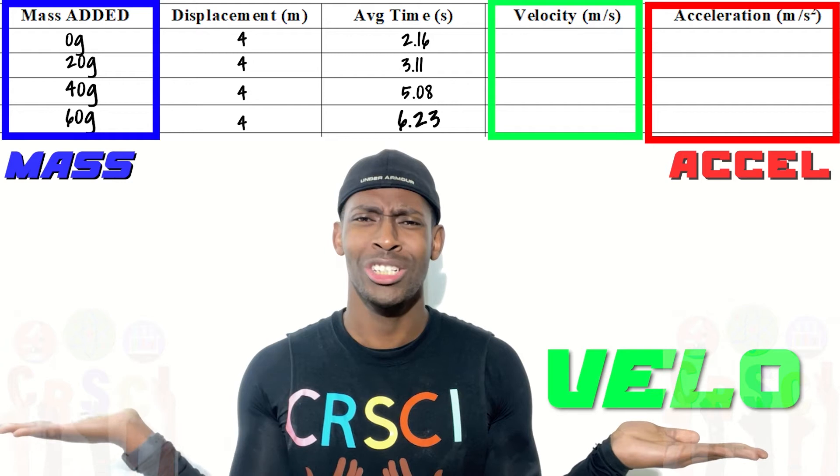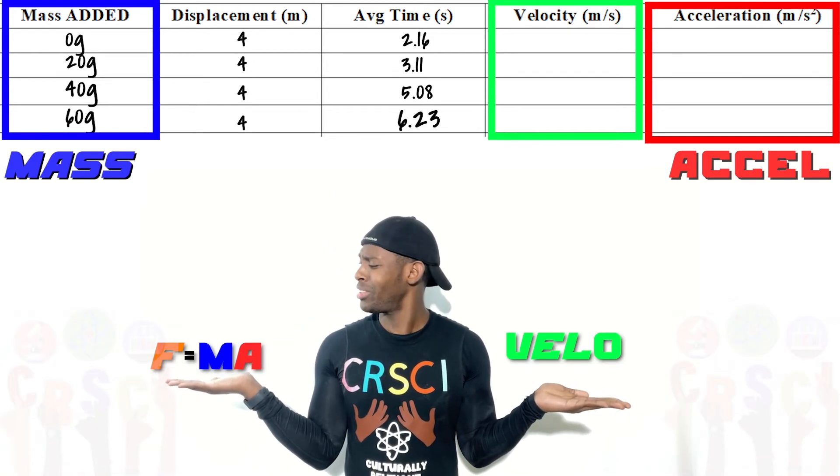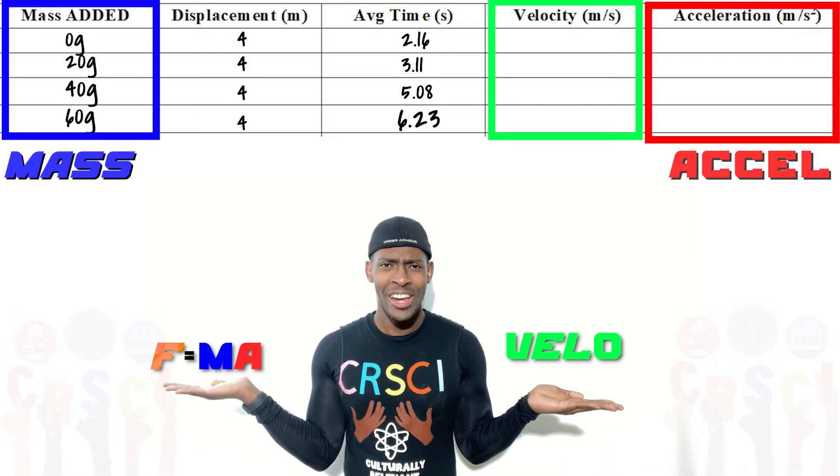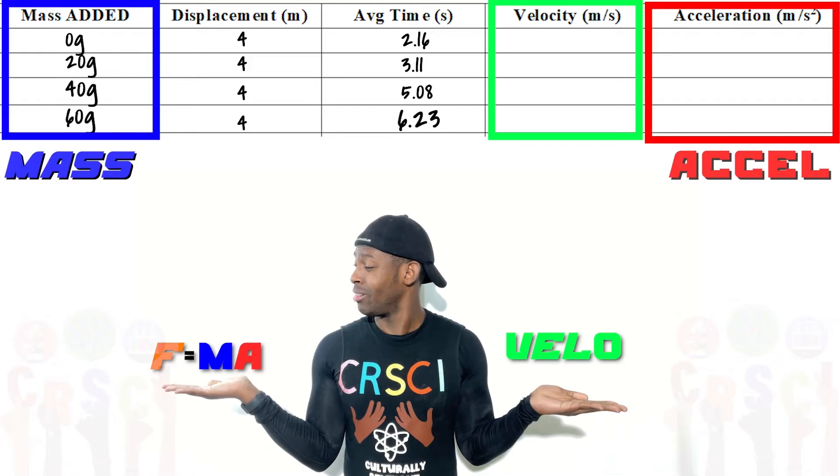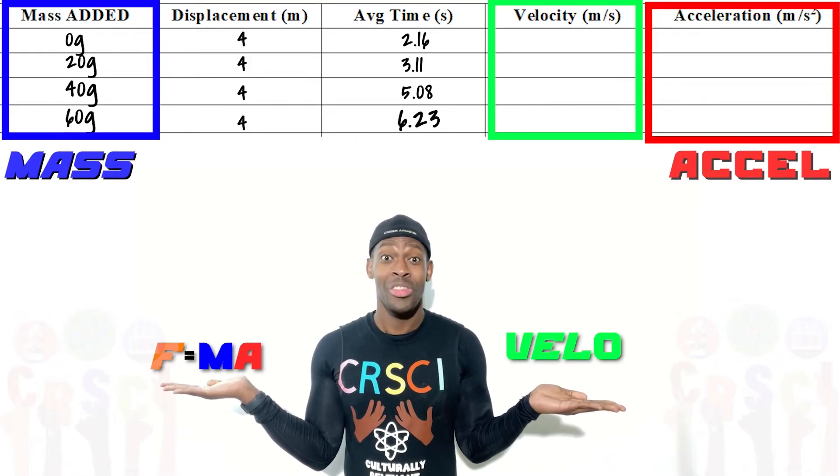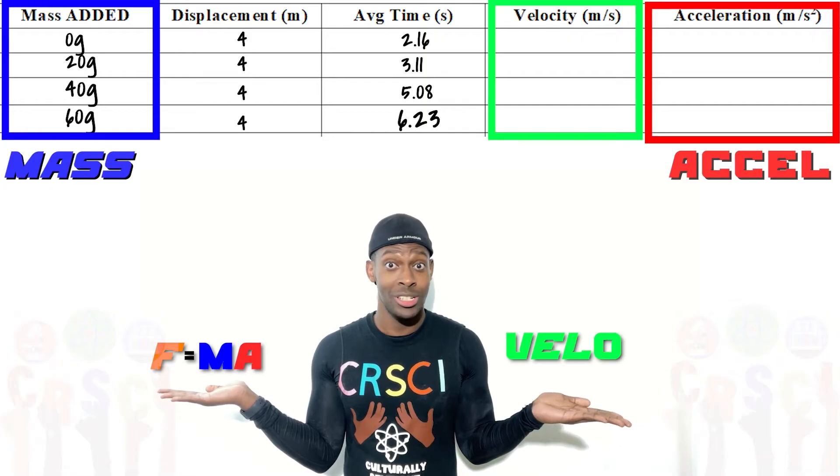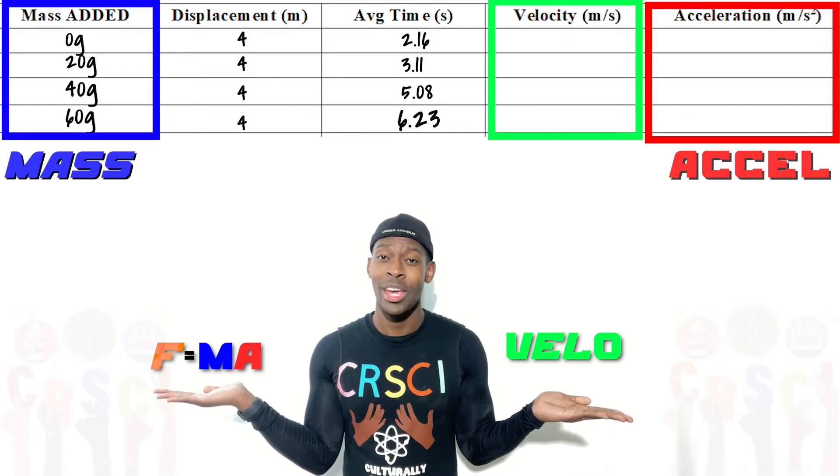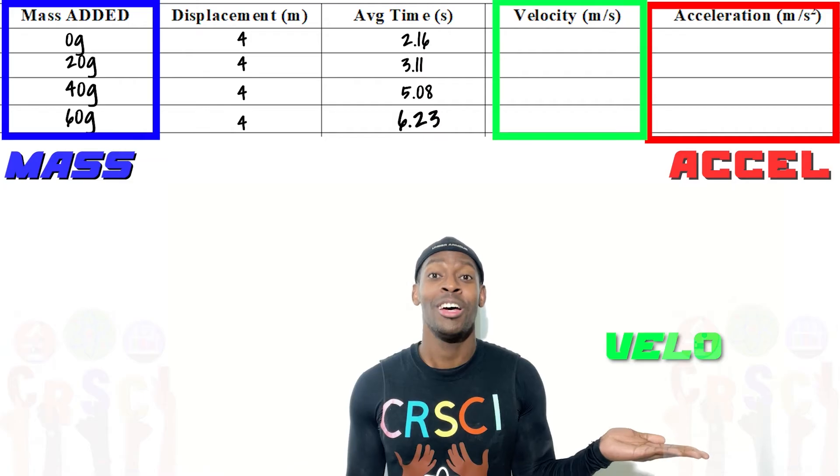And why can't we just use the Newton's second law equation? Well, if you look at this equation, there's one thing here that we actually don't have a value for: the net force. Now, while you were blowing the balloon up, hopefully to the same amount each time, and we know that the force is constant, if we don't have a value for it, you can't use it.